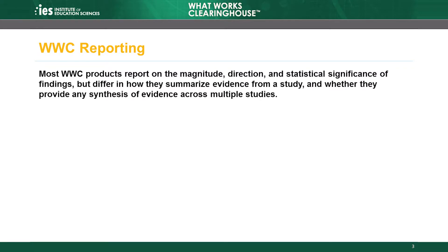Most WWC products report on the magnitude or size of an intervention's estimated impacts, whether the direction of the impacts suggest an intervention has positive or negative effects, and whether the findings are statistically significant. WWC products differ in how they summarize evidence from a study and whether they provide any synthesis of evidence across multiple studies.